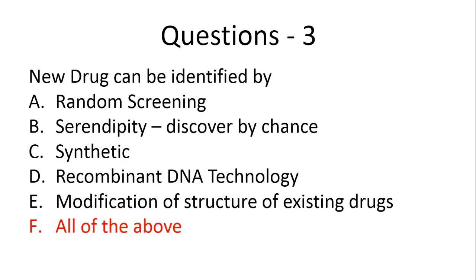New drugs can be identified by random screening — you take some chemicals and do random screening for their activity, solubility tests, stability tests, or use computational technology for screening. Serendipity means you wanted to discover one thing but accidentally made a better discovery — for example, sildenafil was developed for pulmonary artery hypertension but became useful for erectile dysfunction, as it was found to be a good vasodilator increasing blood flow.